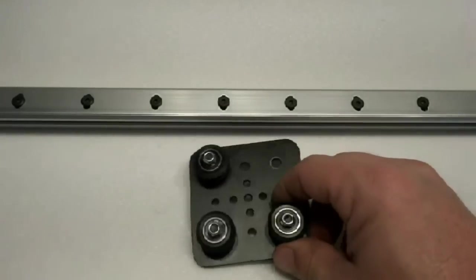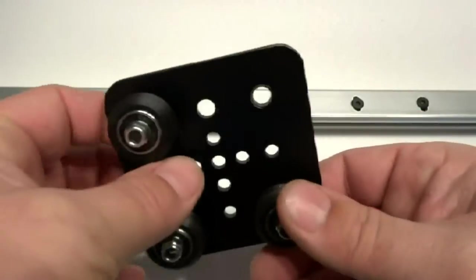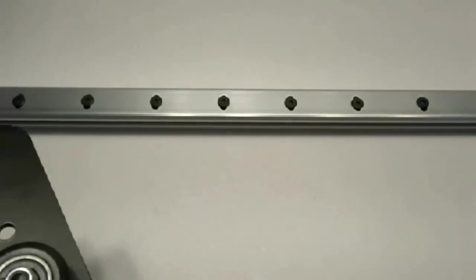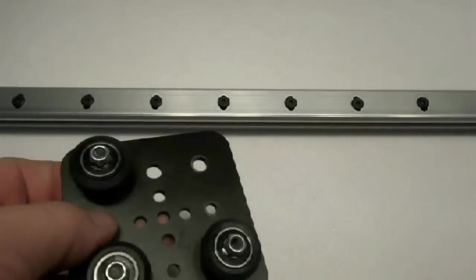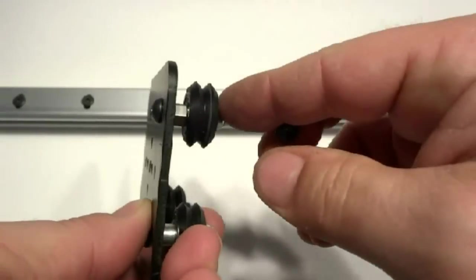In this example we'll install one of the Delron Dual V wheels onto the aluminum plate so that we can test it out on the open rail system. If you want, there's two ways you can do this. You can have the nut on top.